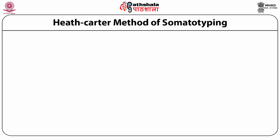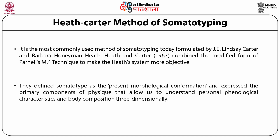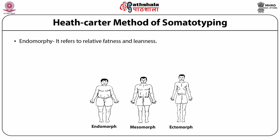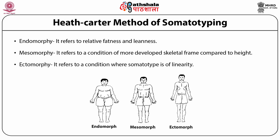The Heath-Carter method of somatotyping is the most commonly used method today, formulated by J.E. Lindsay Carter and Barbara Honeyman Heath. Heath and Carter in 1967 combined the modified form of Pannell's M4 technique to make the system more objective. They define somatotype as the present morphological conformation expressing the primary components of physique that allow us to understand personal phenological characteristics and body composition three-dimensionally.